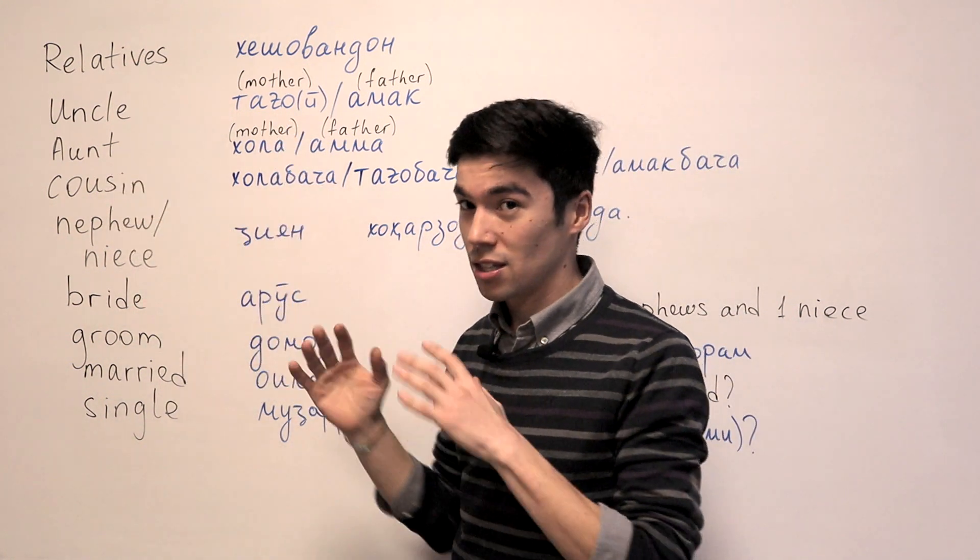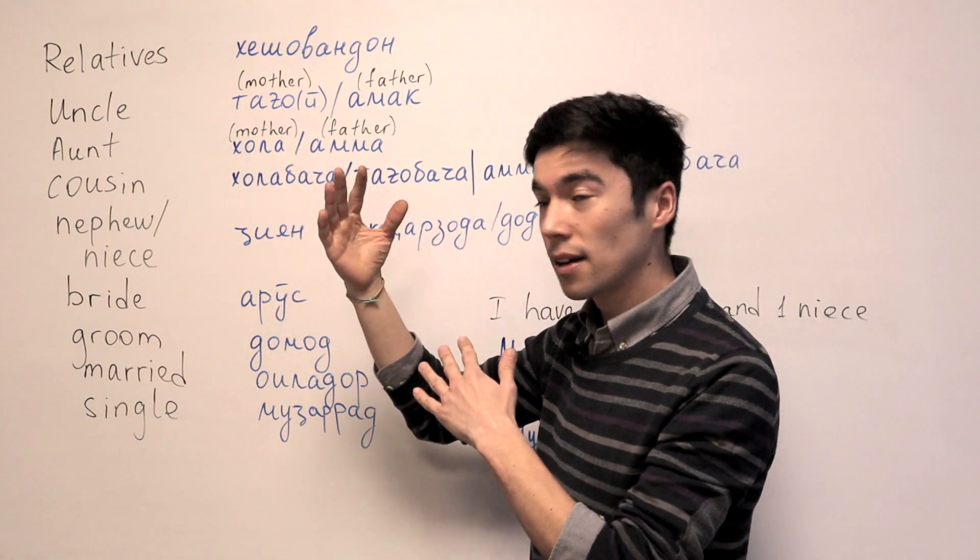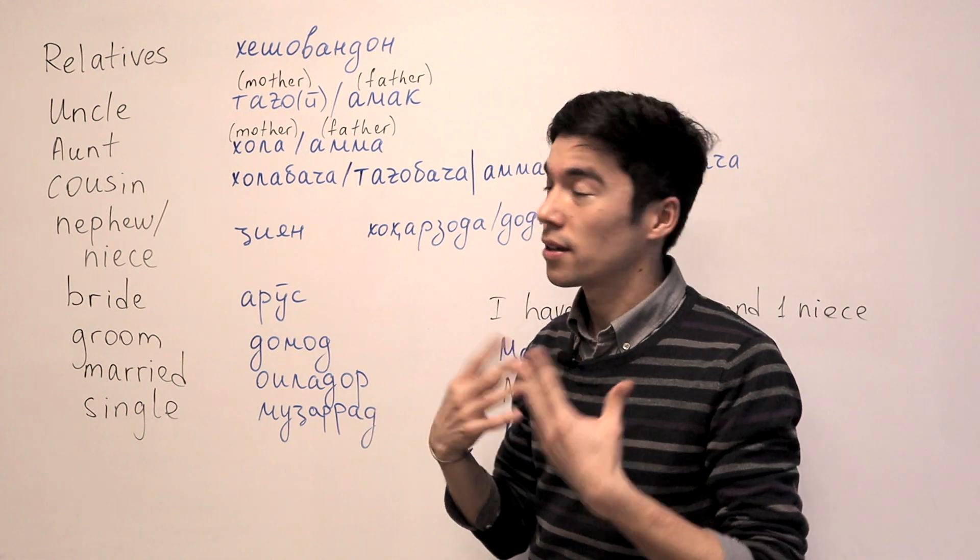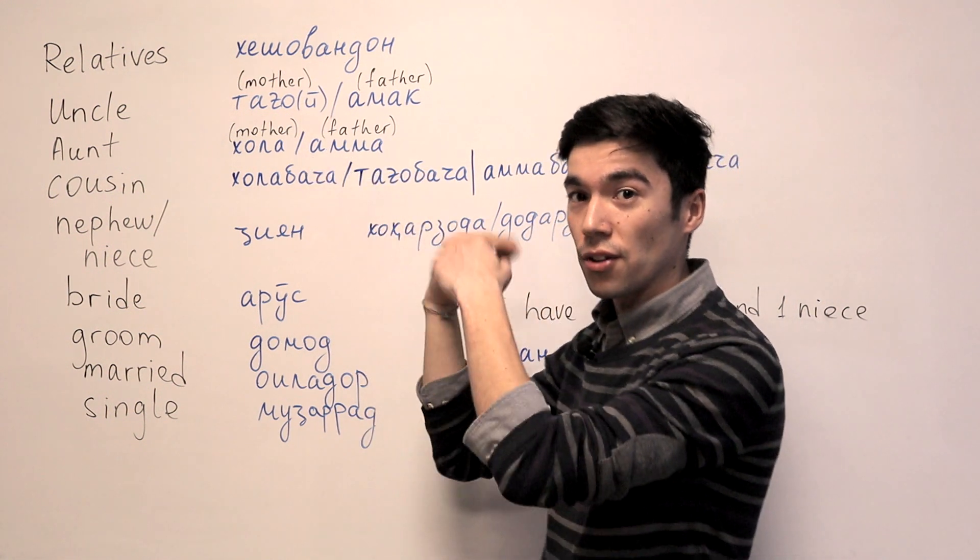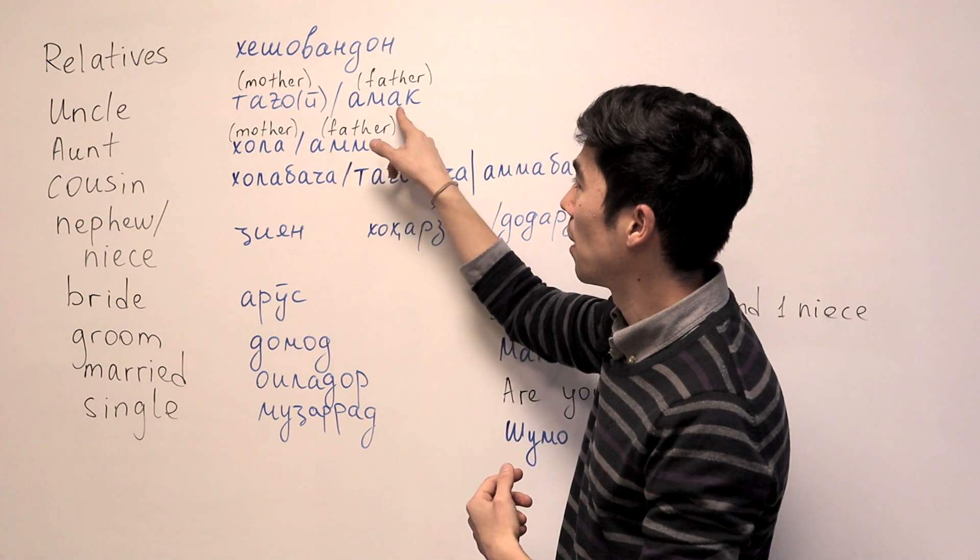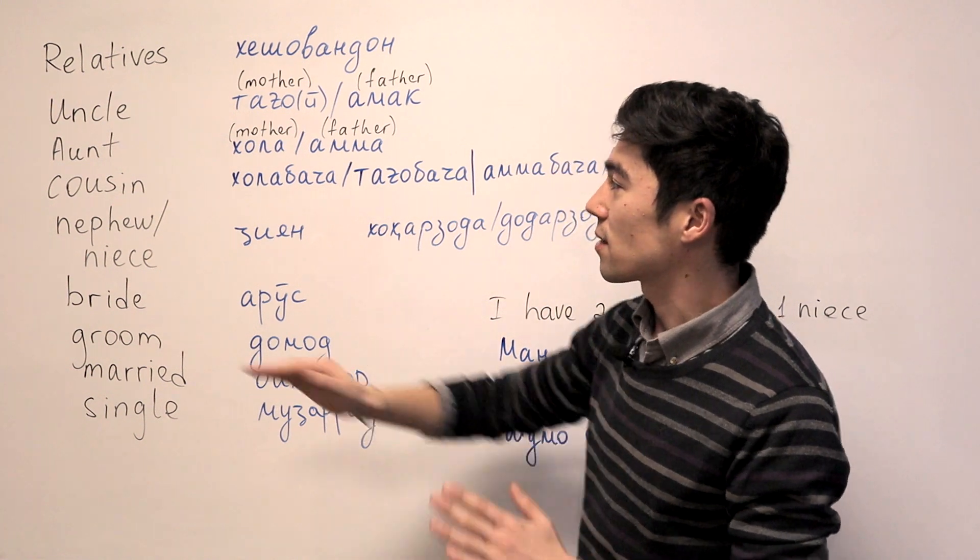And aunt, the same thing like with uncle. Khola, from the mother's side. Khola, I say Oy Khola. And Amma will be from the father's side. Amma, Amak. Both from the father's side.